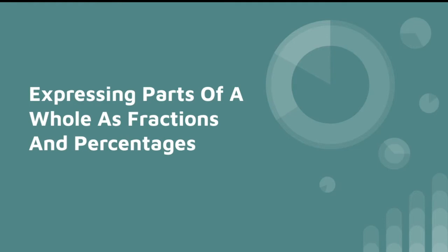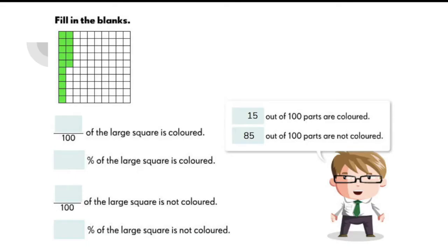Now let's try to learn how to express parts of a whole as fractions and percentages. Here's a 100 squared grid. 15 out of 100 parts are colored, while 85 out of 100 parts are not colored.